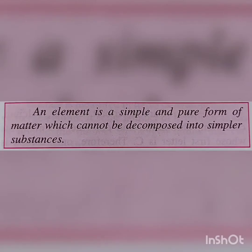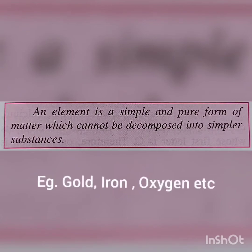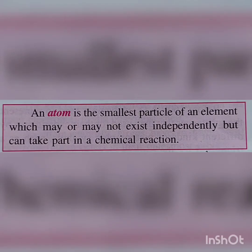Let's see the first thing: what is an element? An element is a pure form of matter which cannot be decomposed into simpler substances. Next, what is an atom? An atom is the smallest particle of an element which may or may not exist independently, but it can take part in a chemical reaction. Now, why did they say 'may or may not exist independently'?